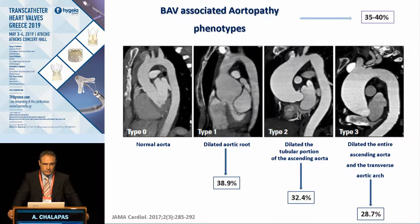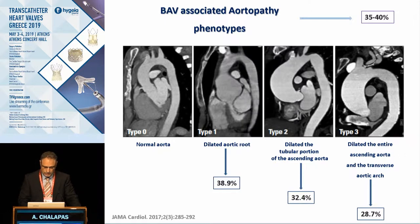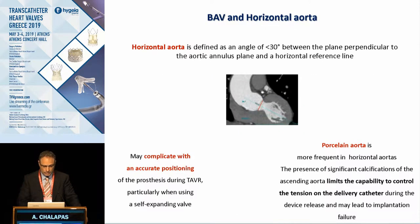We know that the bicuspid valve is often combined with aortopathy, occurring in up to 40% of cases. There are different types: type 1 is characterized by dilated aortic root in up to 39% of cases; type 2 by dilatation of the tubular portion of the ascending aorta; and type 3 by dilatation of the whole ascending aorta and the aortic arch simultaneously. Aortopathy is associated with up to five times higher incidence of complications such as aortic dissection, more often seen with balloon-expandable valves, especially when oversized.